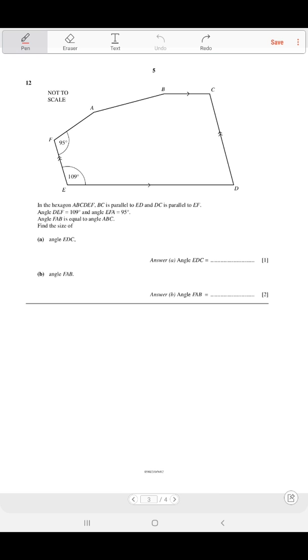The angle FAB is equal to angle ABC. Let's call FAB angle X and this angle X - they are equal. Find the size of angle EDC. This is EDC.